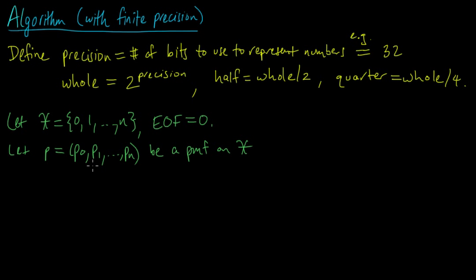And now I'm going to put an additional requirement on p. We're going to require that the numbers p_i can be represented as rationals r_i over R, where each r_i is going to be some integer, and capital R is going to be the sum of the r_i's from i equals 0 up to n.